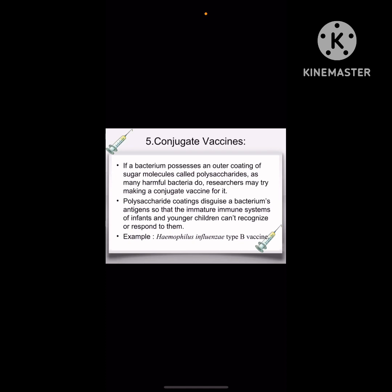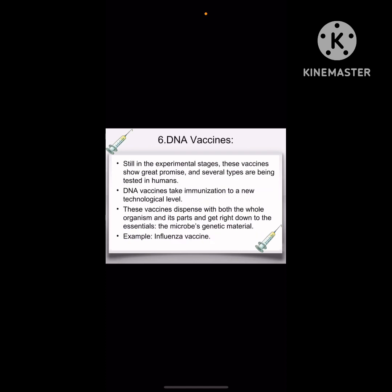Agla hai hamare conjugate vaccines. If a bacterium possesses an outer coating of sugar molecules called polysaccharides, as many harmful bacteria do, researchers may try making a conjugate vaccine for it. For example, Haemophilus influenzae type B vaccine.